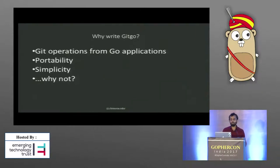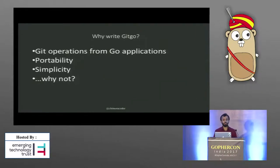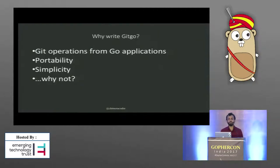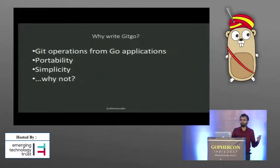There are a number of reasons that we decided to write GitGo. It allows us to perform Git operations from Go applications. It's also more portable because it's written in Go. And it's simpler code because it's written in Go instead of C. But most importantly, why not? Why not rewrite Git in Go?